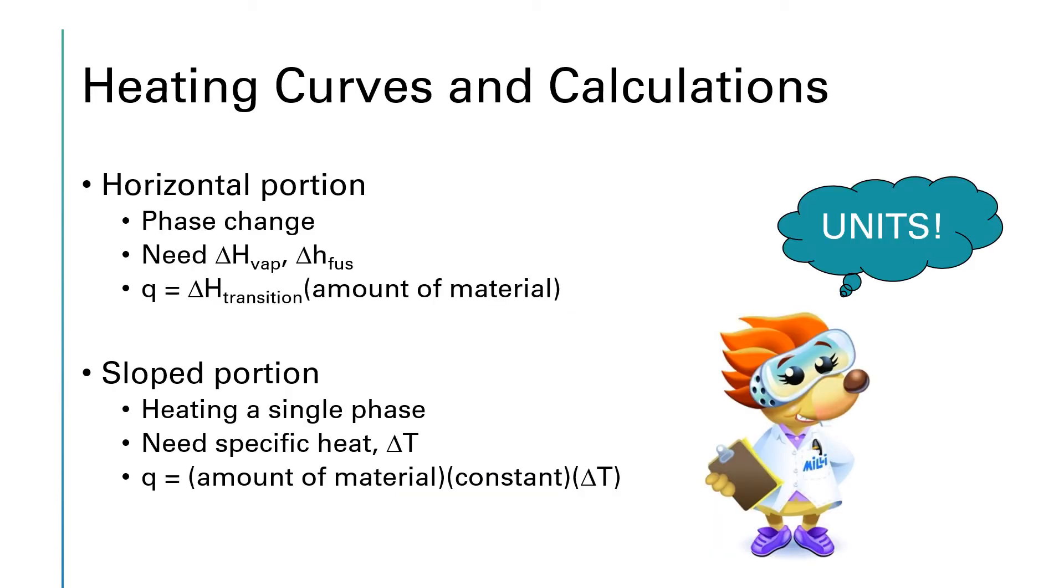The types of problems that you'll be asked to calculate off of heating curves require you to understand how you would calculate the heat associated with each region of the curve. If we're talking about a horizontal portion that's going to represent a phase change, either vaporization or fusion. And in order to calculate the ΔH or the heat associated with that, you'll need to take the ΔH of that transition, either ΔH of vaporization or ΔH of fusion, and multiply it by the amount of material that you have.